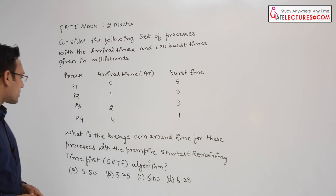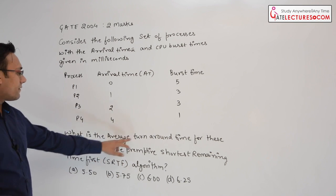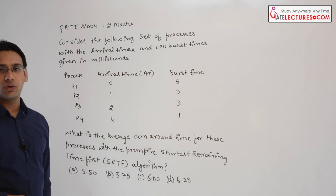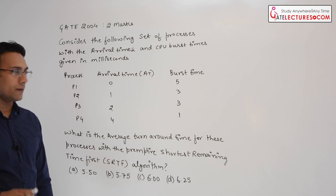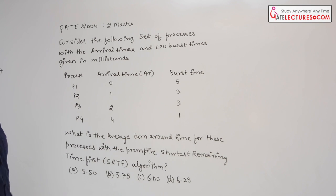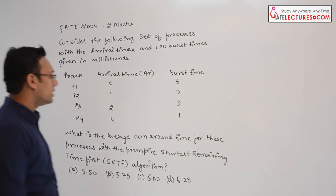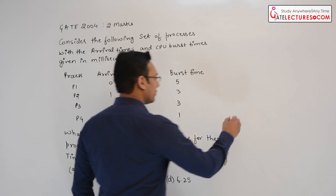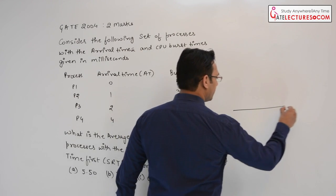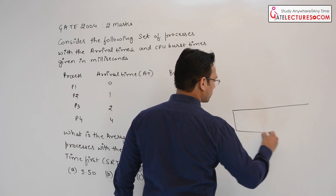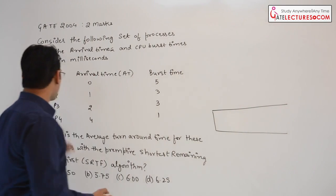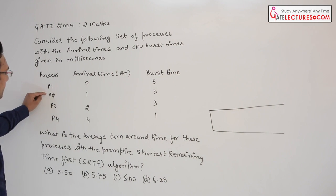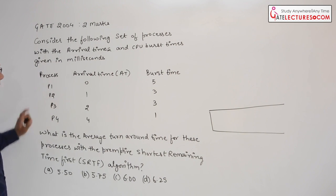They are asking what is the average turnaround time for each process. Let us make a Gantt chart for this. We have the processes P1, P2, P3, and P4.